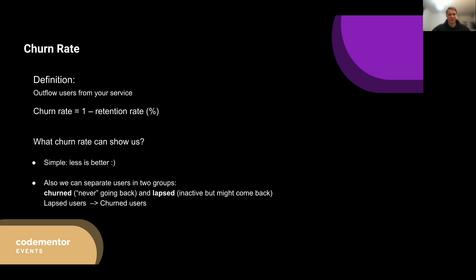With lapsed users you can apply retention mechanics — like introducing new levels or offering discounts in e-commerce. The flow goes: first a user lapses, then they churn. There is room to intervene at the lapse stage. When churned users do return to your service for some reason, you can treat them almost as new users, since they left relatively long ago.